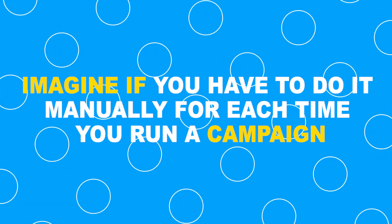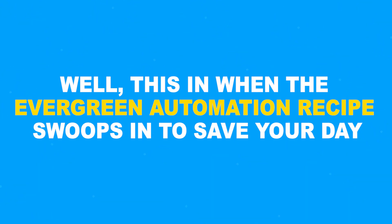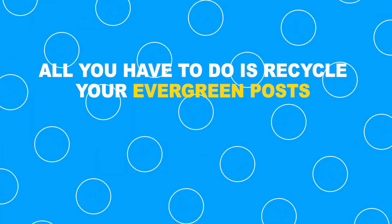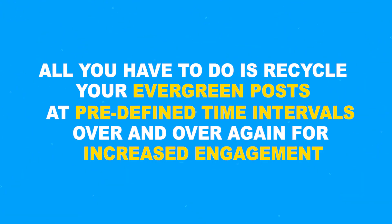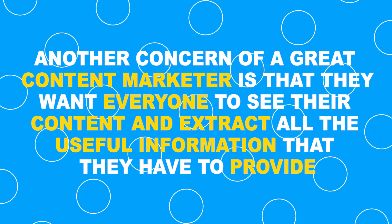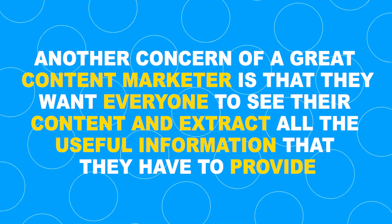This is when the evergreen automation recipe swoops in to save your day. All you have to do is recycle your evergreen posts at predefined time intervals over and over again for increased engagement. Another concern of a great content marketer is that they want everyone to see their content and extract all the useful information they have to provide.